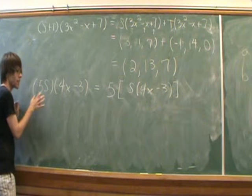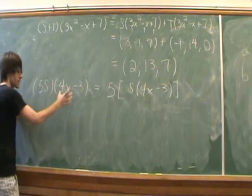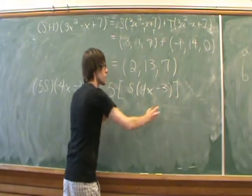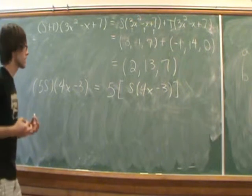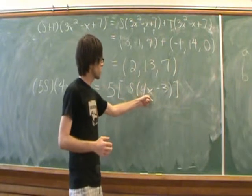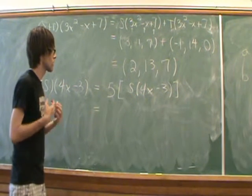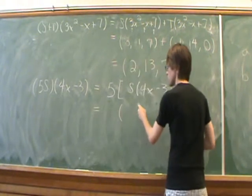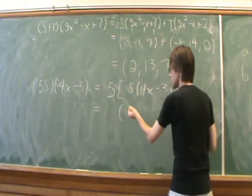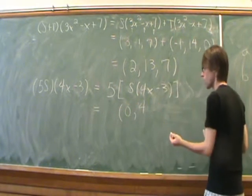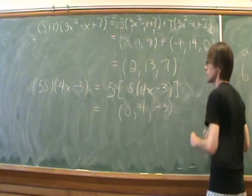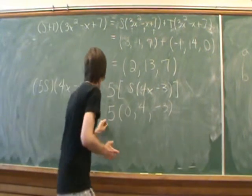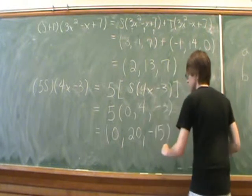Next we deal with scalar multiplication: what is 5S evaluated at this polynomial? By definition it's 5 times whatever we get when we send the polynomial through linear transformation S. We match up the coefficients in front of x squared, x, and the constant term — they become the first two components. The coefficient in front of x squared is 0, the coefficient in front of x is 4, and the constant term is -3. Multiplying that vector by 5 gives us the final answer: (0, 20, -15).